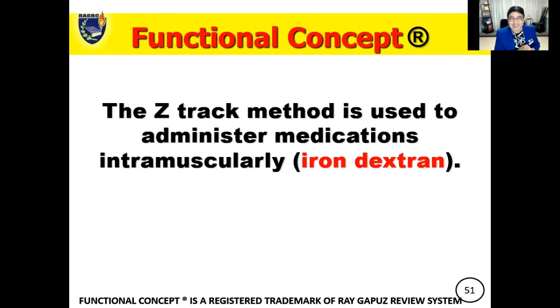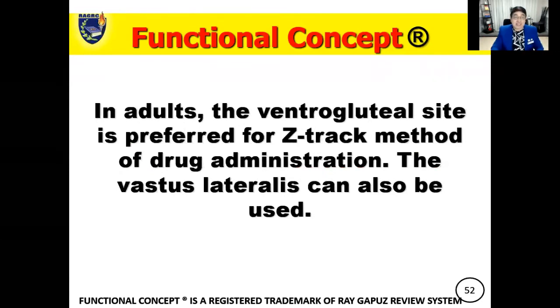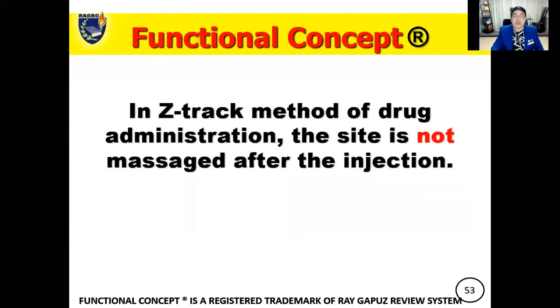Let's begin with my favorite method of studying — something I created; it took me three years to perfect this method, and a master's degree from a U.S. university. The Z-Track method is used to administer medications intramuscularly. Usually these medications are those which could potentially stain the skin, like iron dextran. In adults, the ventrogluteal site is preferred for the Z-Track method of drug administration, and the vastus lateralis can also be used as an alternative. In the Z-Track method, the site is not massaged after the injection.